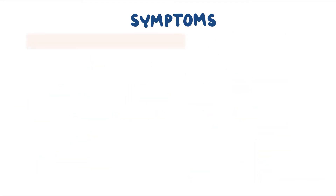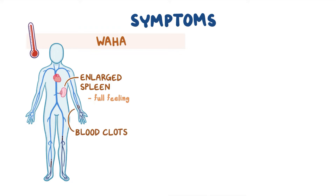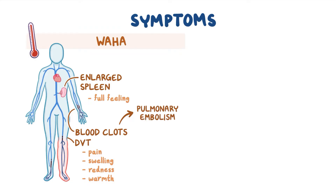Individuals with WAHA may also develop an enlarged spleen, causing a full feeling in the abdomen. Individuals may also develop blood clots that can form in the legs, called deep vein thrombosis, causing symptoms such as pain, swelling, redness, and warmth in one leg. Clots can detach and travel to the lungs, called pulmonary embolism, causing symptoms such as shortness of breath, chest pain, and coughing up blood.